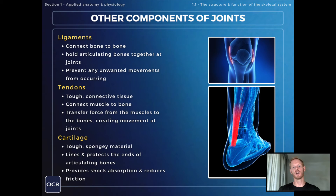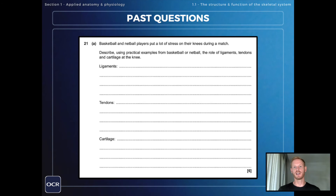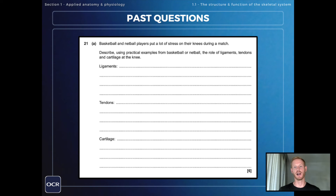Now that was everything you need to know on the components of synovial joints, but before we finish we'll just take a look at a past exam question to put this information into context. Basketball and netball players put a lot of stress on their knees during a match. Describe, using practical examples from basketball or netball, the role of ligaments, tendons and cartilage at the knee.